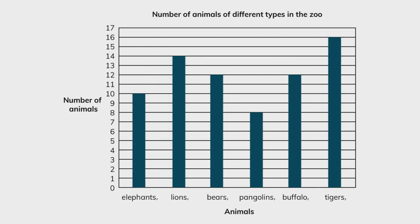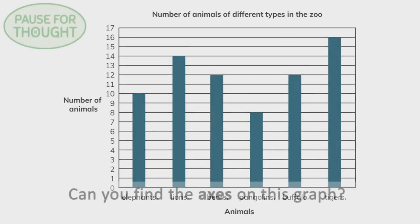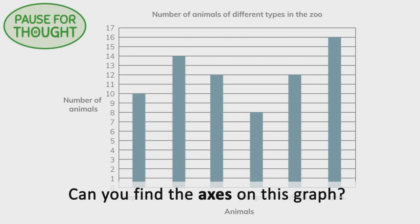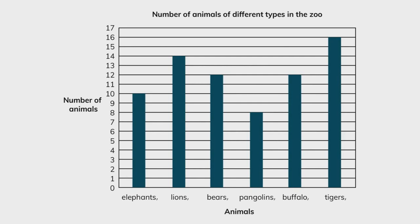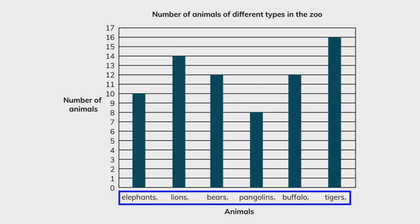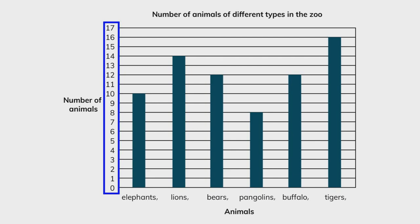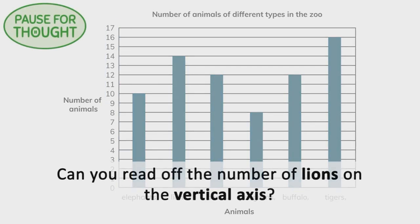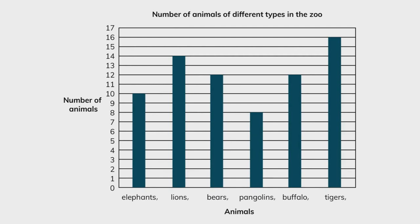We can also show the numbers of animals on a bar chart. Can you find the axes on this graph? There are two axes. The horizontal axis is at the bottom and shows the different types of animals. The vertical axis is on the side and is used to measure the height of the bars. Can you read off the number of lions on the vertical axis? There are fourteen lions.